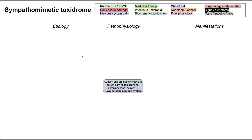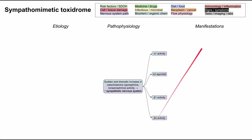This toxidrome happens when you have a sudden and dramatic increase in catecholamine activity. Two of the most prominent catecholamines are epinephrine and norepinephrine, also called adrenaline and noradrenaline, and all of these catecholamines serve to increase the activity of the sympathetic nervous system. There are four main receptors at play, called the adrenergic receptors: alpha-1, alpha-2, beta-1, and beta-2, and they all have slightly different downstream effects.